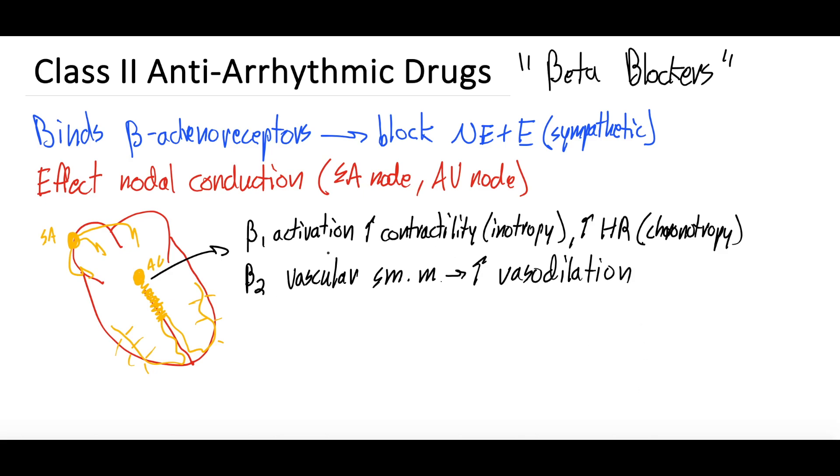This is where we get into non-selective and selective beta blockers. So beta blockers affect both beta 1 and beta 2 receptors, but different beta blockers affect them differently.